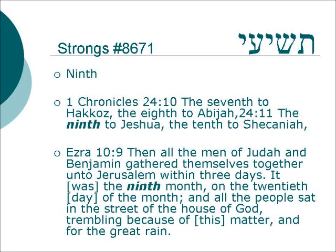I included this verse because it has an interesting fact. The father of Yochanan the Baptizer was of the course of Abiyah, and his was the eighth course. And the course that follows him is the course of Yeshua — kind of an interesting coincidence, or maybe not. In Ezra 10:9, it was the ninth month, on the twentieth day of the month. The ninth month is the month in which Hanukkah takes place — it is wintertime, and this is when it rains in the land.